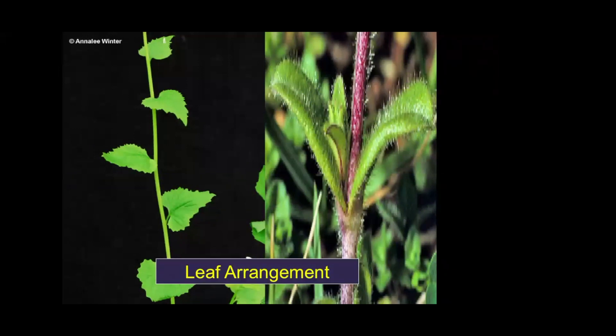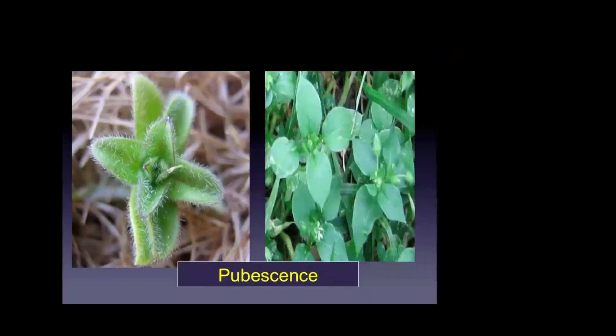Broadleaf weeds can also be identified by how leaves are arranged on the stems — some have alternate leaf arrangement, others have opposite arrangement where leaves join together at the base of the stem. Some weeds have dense hairs all over the leaves and stems, like sticky chickweed, while some plants have a few hairs or are smooth.